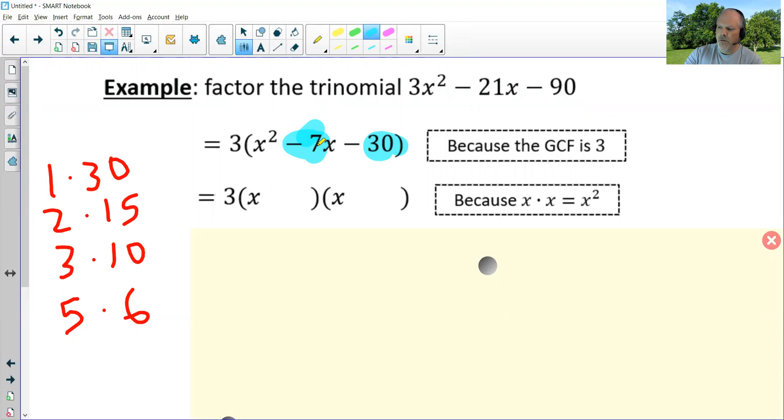So I can look at one times 30. If I put positive one minus 30, I get negative 29. If I do negative one plus 30, I get positive 29. Neither of those, of course, is negative seven. If I do two and 15, 15 minus two is 13. Negative two plus 15, 13. Two minus 15, negative 13. None of those is negative seven.